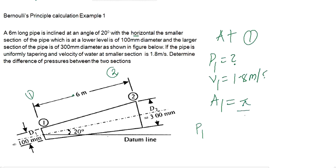Then it is pi over 4 d squared, which is equal to pi over 4 times 0.1 squared. And the answer is 0.00785 square meters. That is A1.